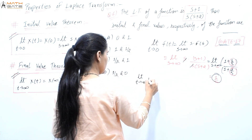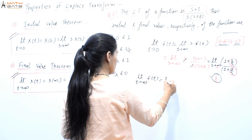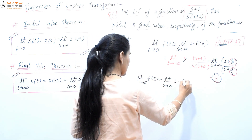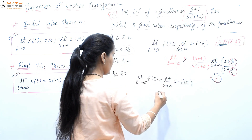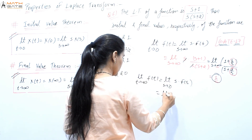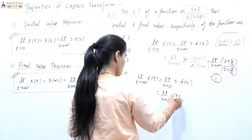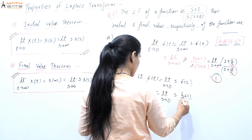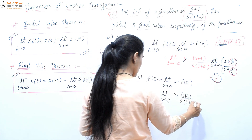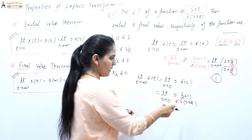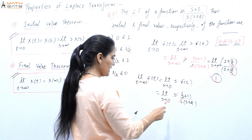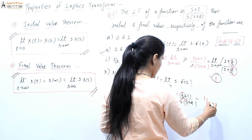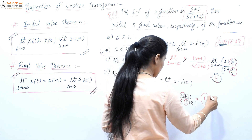To confirm, apply the final value theorem: limit t→∞ of f(t) = limit s→0 of s·F(s) = limit s→0 of s·(s+1)/[s·(s+2)]. The s cancels. Applying limit s→0, we get 0+0 divided by 0+2... wait, putting s=0 gives 0·(0+1)/(0+2) = 0. So the final value is 0.